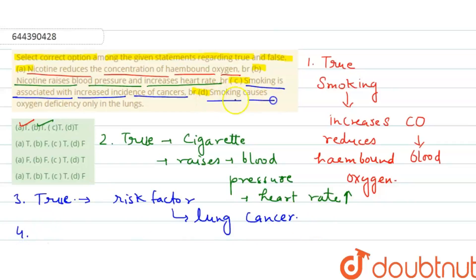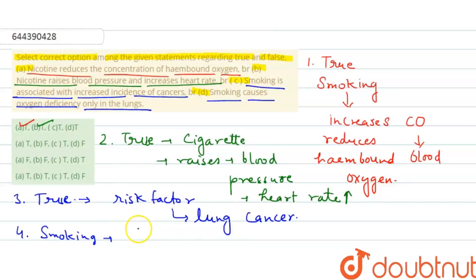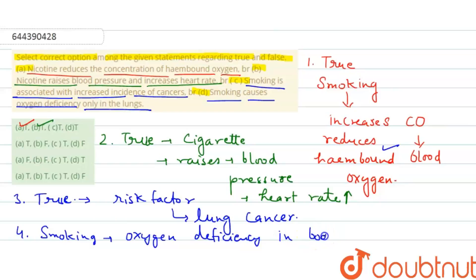The fourth statement is that smoking causes oxygen deficiency only in the lungs — this is false. Smoking leads to a reduction in the concentration of hemoglobin-bound oxygen and increases carbon monoxide content, which directly causes oxygen deficiency in the whole body, not only in the lungs. So the answers are true, true, true, and false — the correct answer is option D.